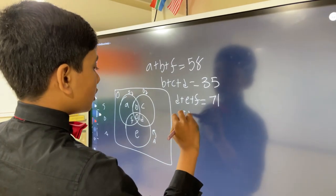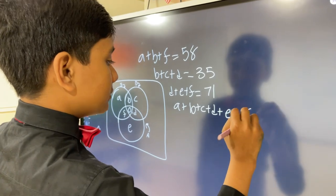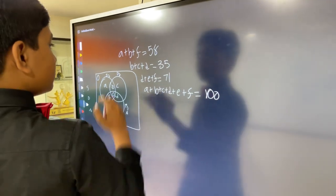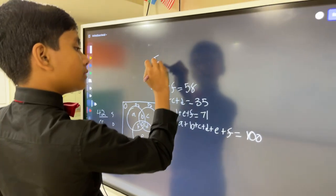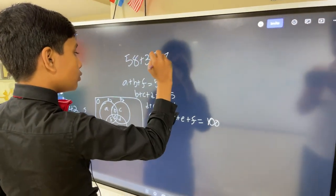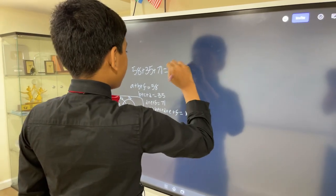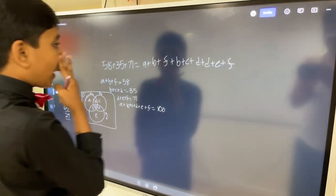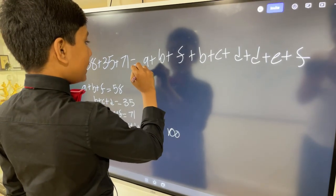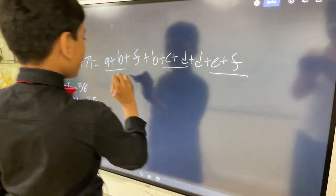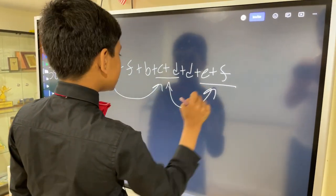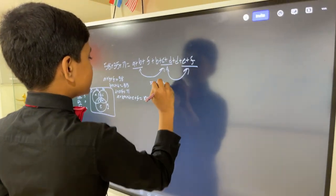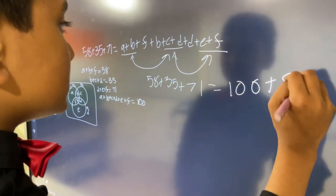And we know that there are 100 students in total, so A plus B plus C plus D plus E plus F equals 100. So now, let's sum up each of these. If we sum up all of those, we get 58 plus 35 plus 71 equals A plus B plus F plus B plus C plus D plus D plus E plus F. So, 58 plus 35 plus 71 equals 100 plus F plus B plus D.